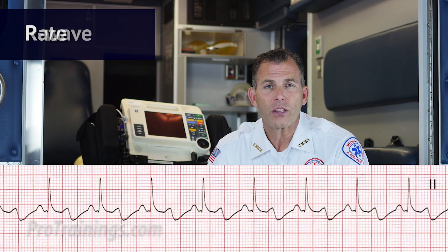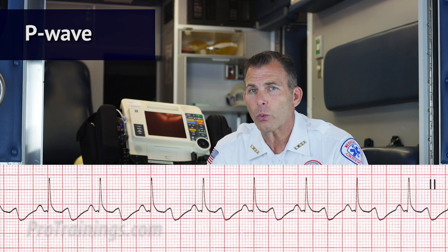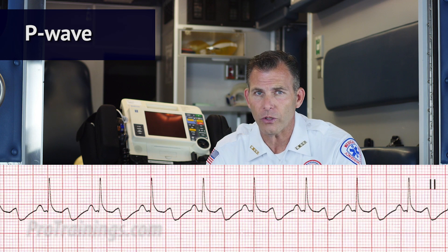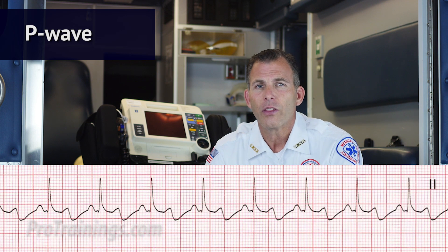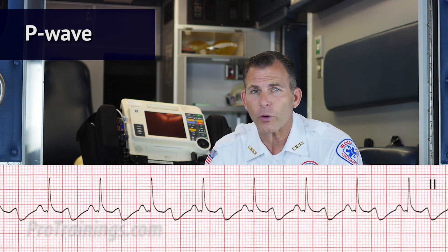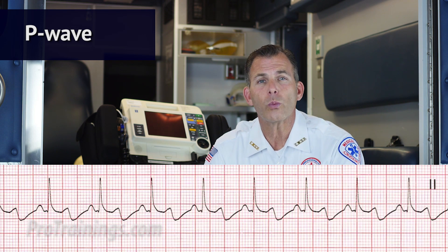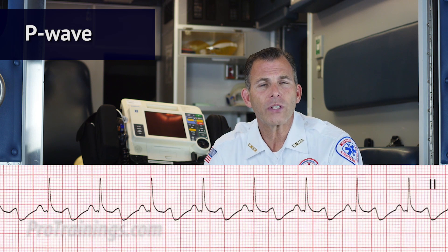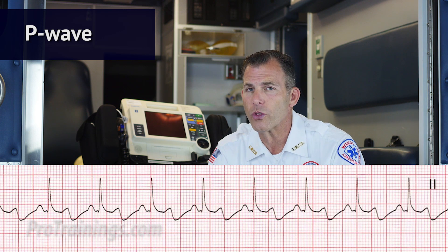Next we evaluate the P wave. Are they present? We can clearly see that the P waves are indeed present. Do they occur regularly? Yes, each of the P waves does occur regularly. Is there one P wave for each QRS complex? There is one P wave for each QRS complex. Are the P waves smooth, rounded, and upright? Yes. Do all P waves have similar shapes? Each has a uniform shape and is smooth and rounded.